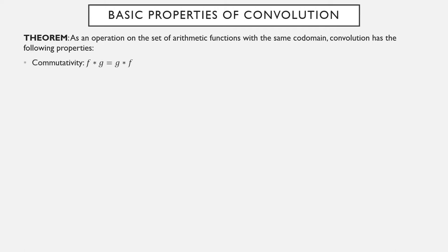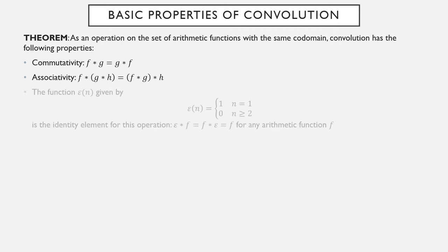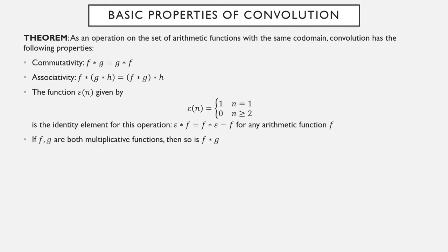It's commutative — the convolution f star g is the same function as g star f. It's associative, so f star g star h is the same function as f star g star h. Also, the function epsilon of n, given by epsilon of one equals one and epsilon of anything else is zero, is an identity element. And the big one: if f and g are both multiplicative functions, then the convolution is also a multiplicative function — that's really why we're interested in it.